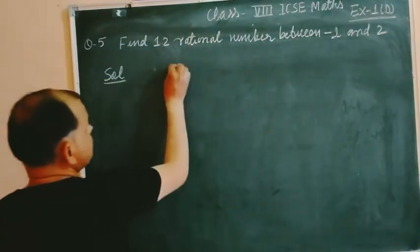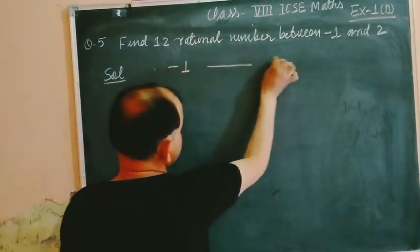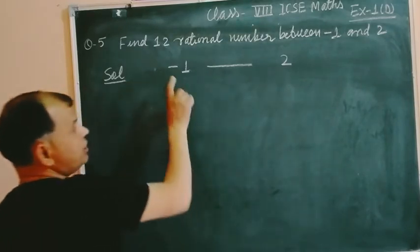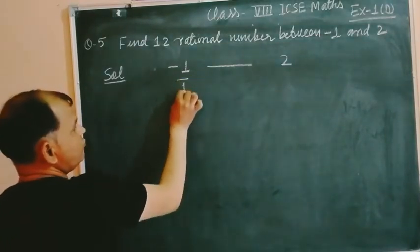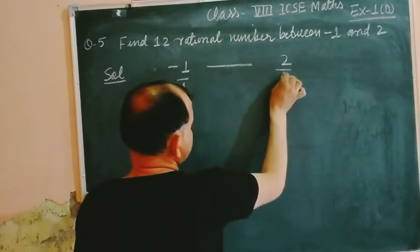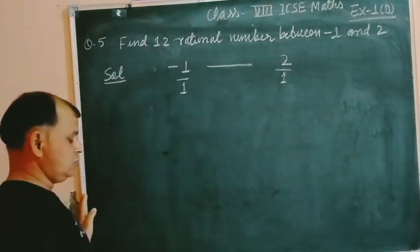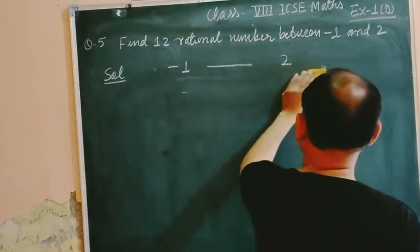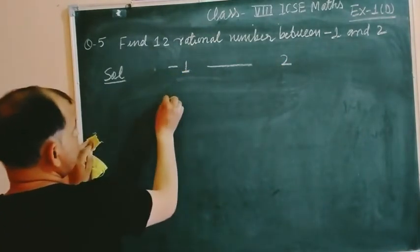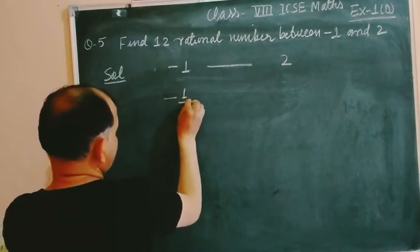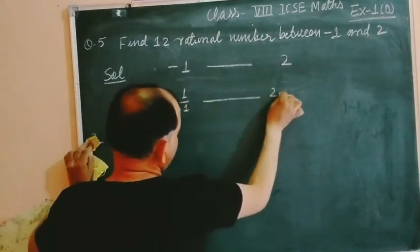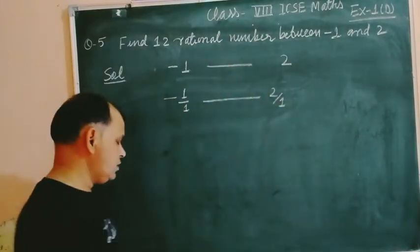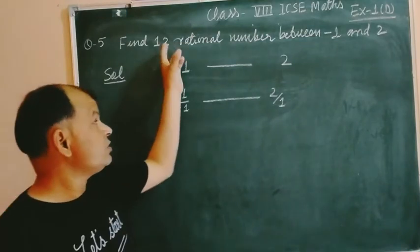We have minus 1 and 2. Their denominator is same: minus 1 upon 1 and 2 upon 1. We can write it in this form. First we have here its original form which is minus 1 and 2. We can write minus 1 upon 1 and 2 upon 1.